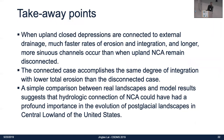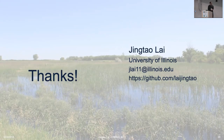In conclusion, my research has three main findings. First, the connected case produces faster rates of erosion and integration, with longer and more sinuous channels. Second, the connected case requires less erosion to accomplish the same degree of integration compared to the disconnected case. Third, a comparison with the Upper Sangamon River Basin in Illinois suggests that hydrologic connection between depressions and meltwater valleys could have had a very important impact on landscape evolution. My module is available on GitHub if you'd like to use it instead of the depression finder and router in LandLab.